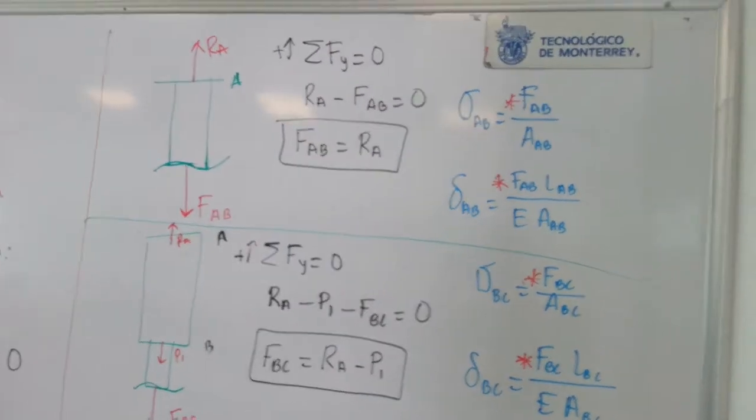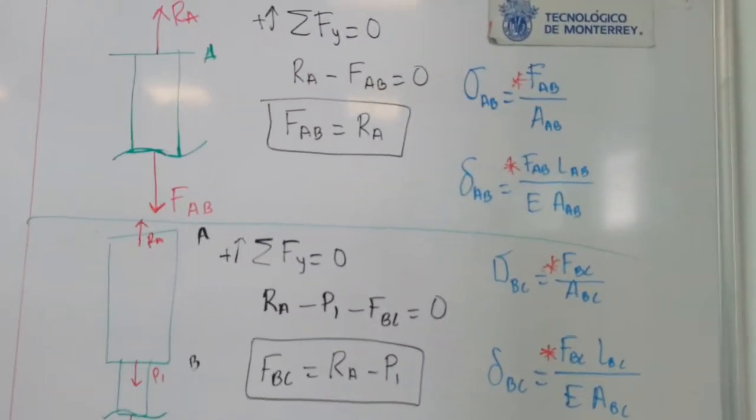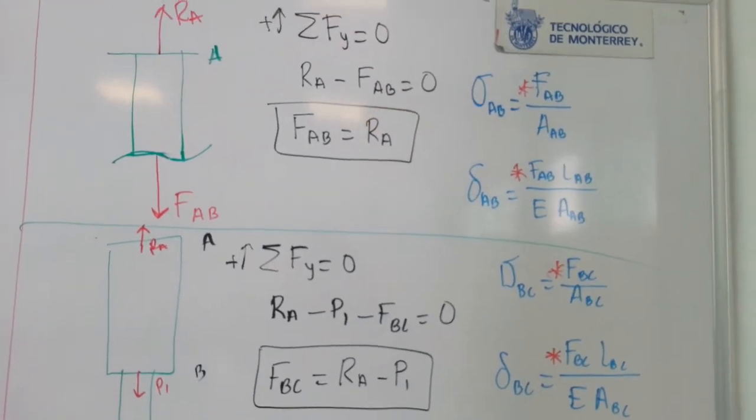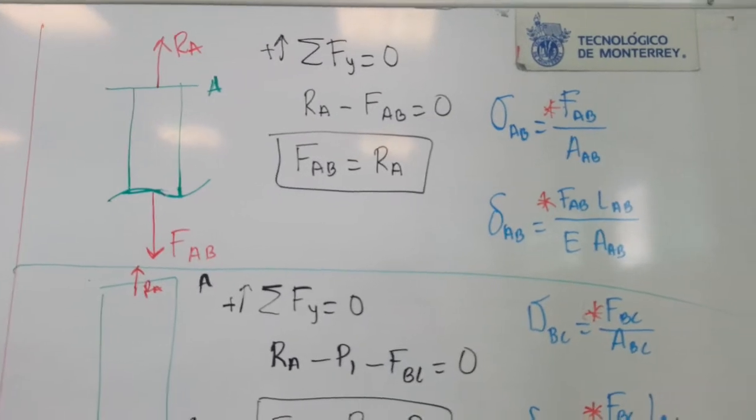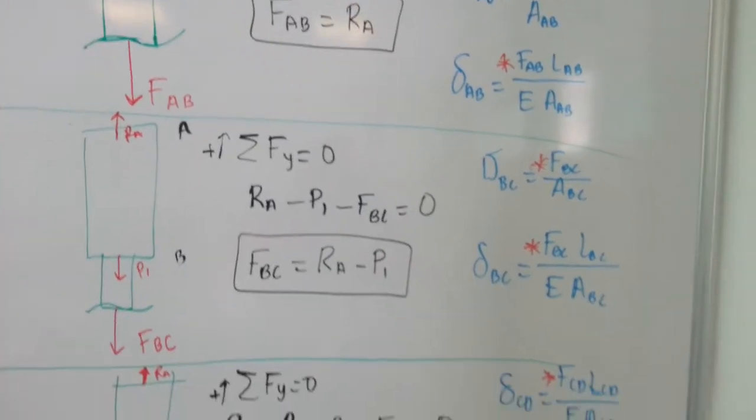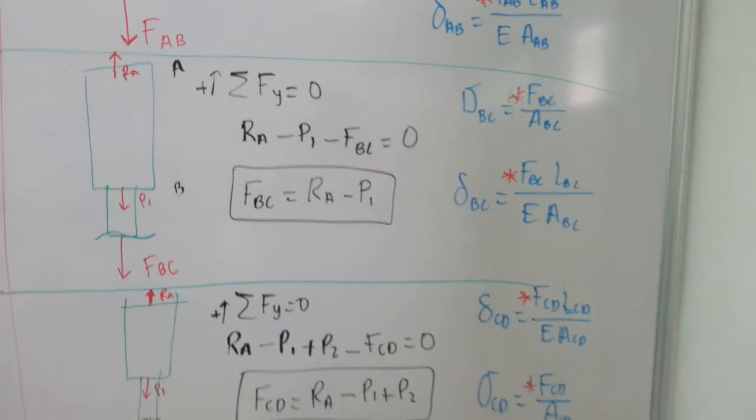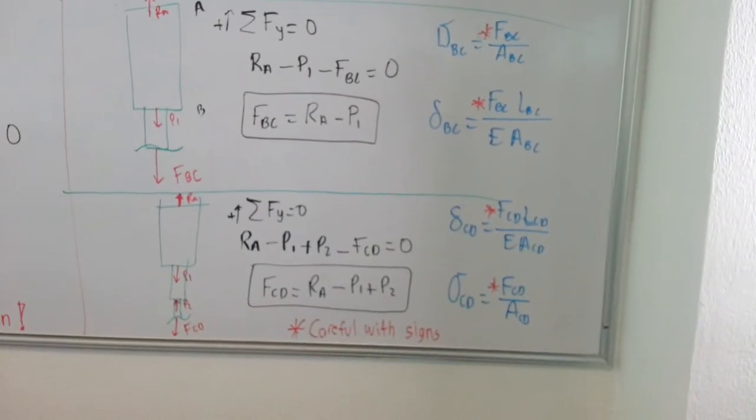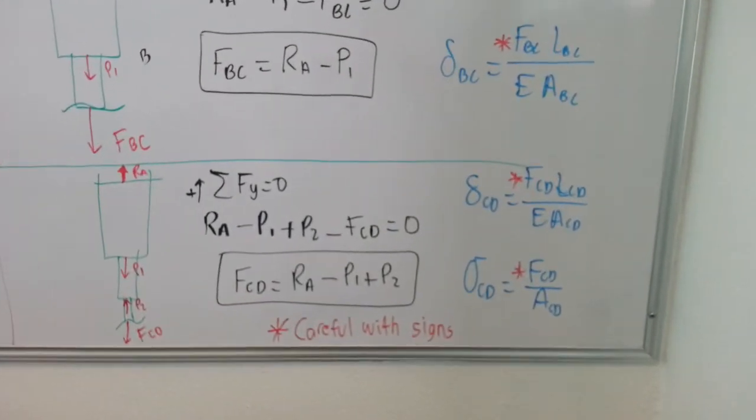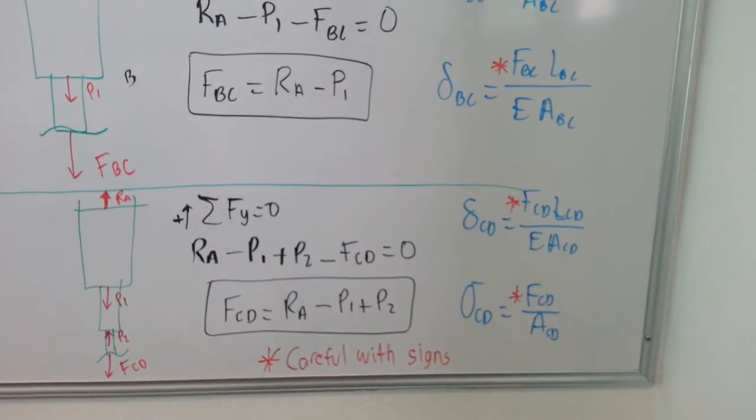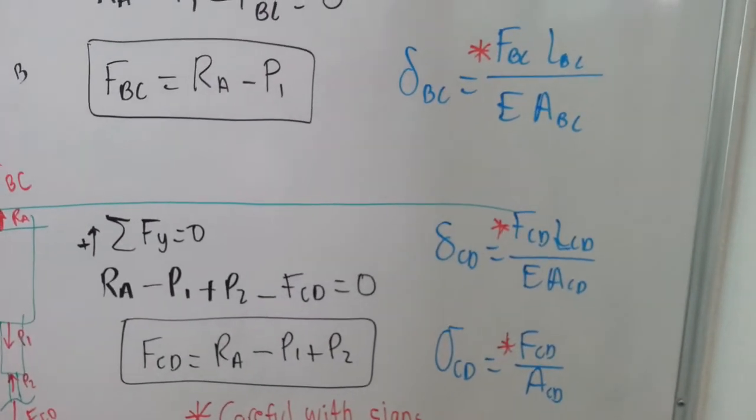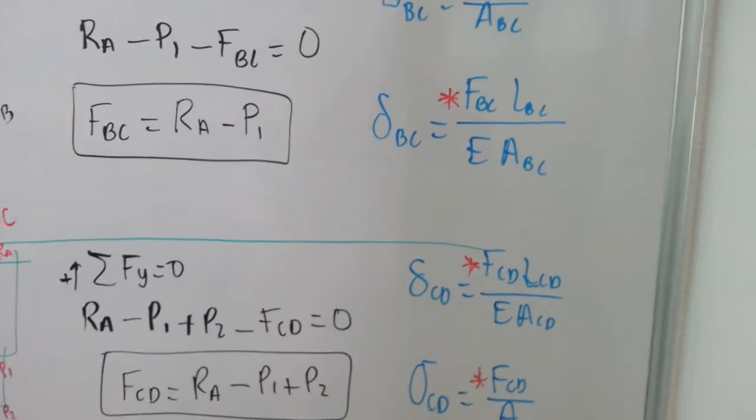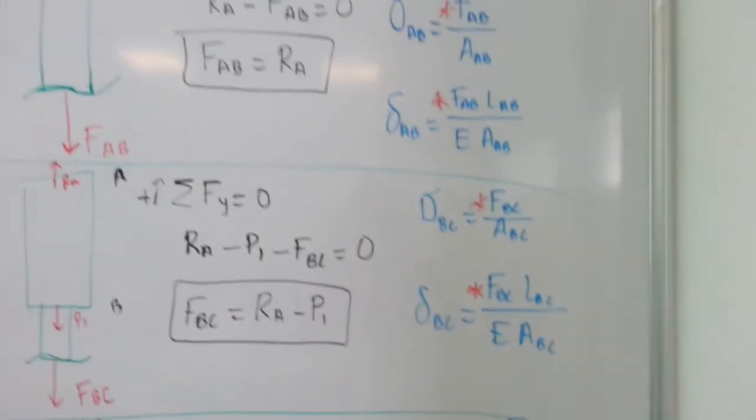You use sections, like in statics, to find internal forces and local equilibrium there to express internal forces in terms of the reaction RA. The same for the second segment. And finally, for the third segment, it's the same. You need to be careful. That's why there is a red asterisk there in each equation because the signs might be different for each of the segments of the bar.